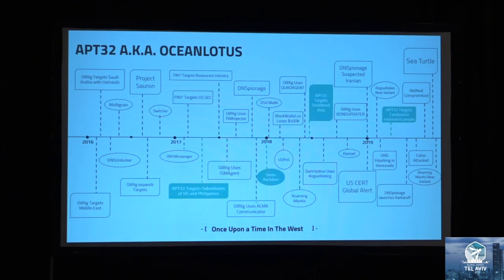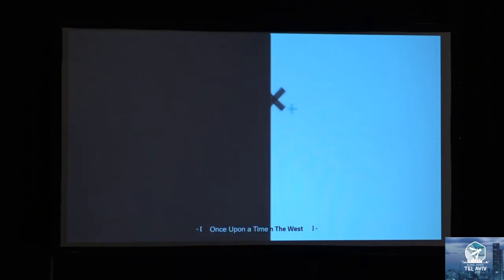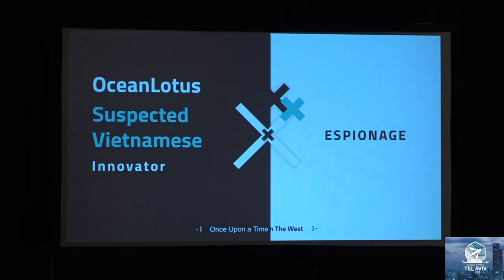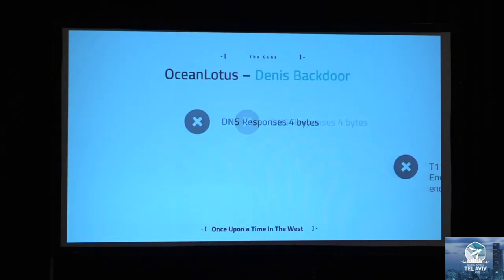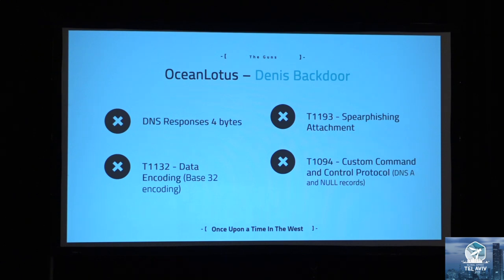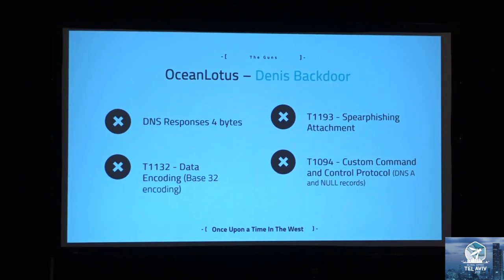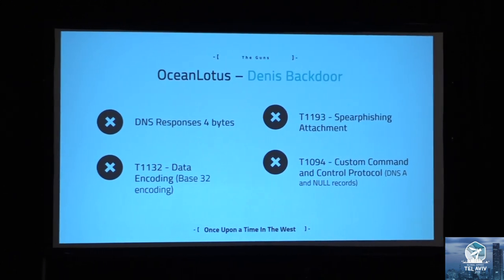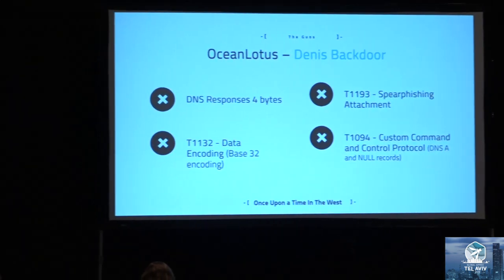Then we have APT32, also known as Ocean Lotus, suspected to be a Vietnamese APT. Their main targets are companies inside Vietnam with economic interests there, as well as other Southeast Asian governments, journalists, and members of the Vietnamese diaspora. They have a complex multi-stage attack workflow, and one of the first stages involves the use of Denis Baxter, a tool that communicates through DNS tunneling. The latest version of this tool added a fallback channel to HTTP in case the DNS tunnel communication fails.